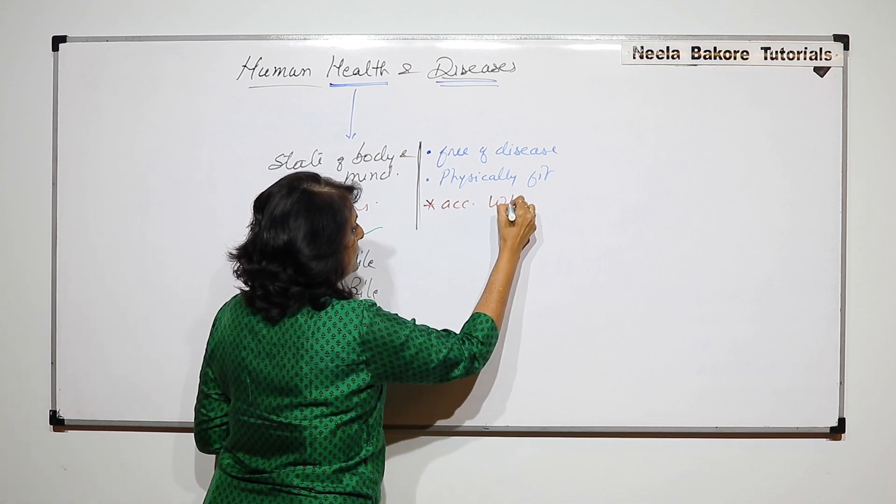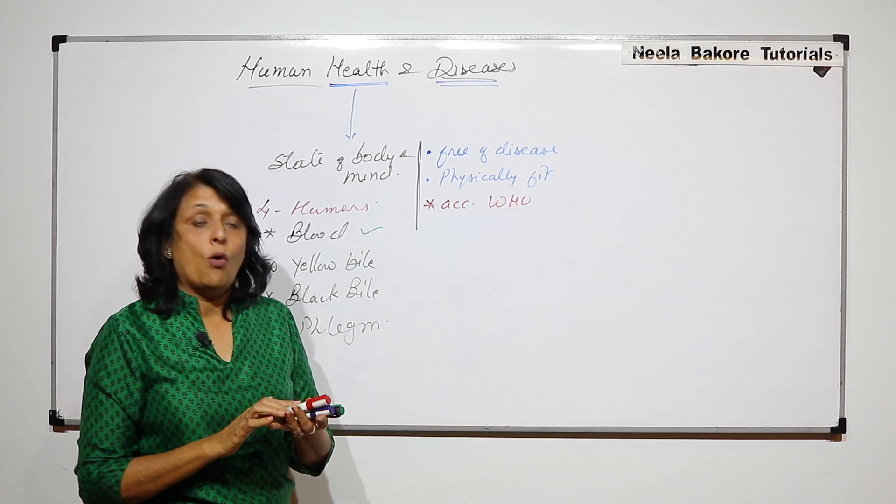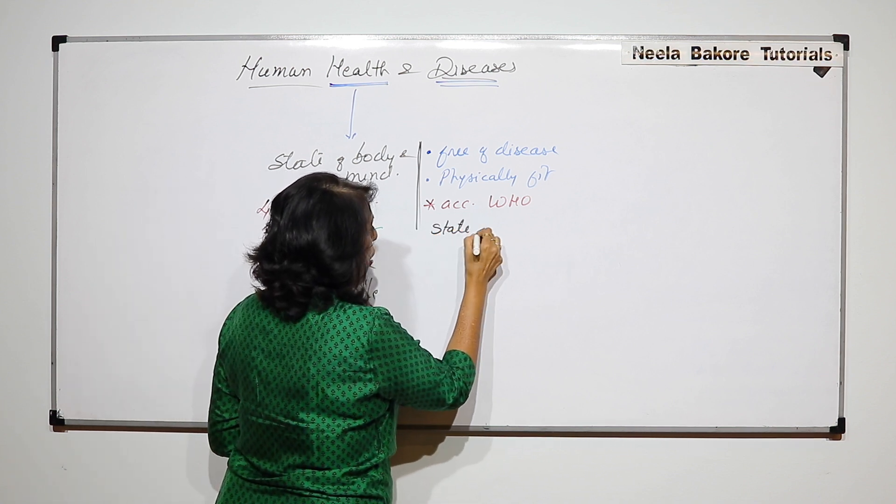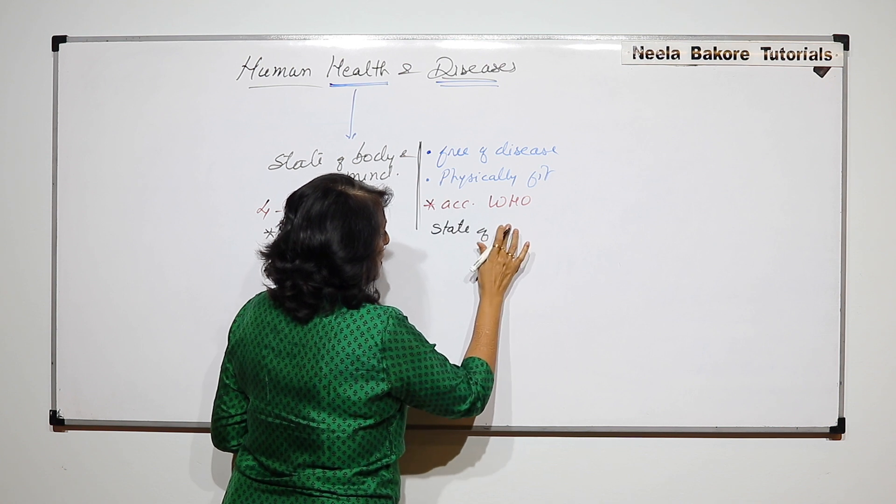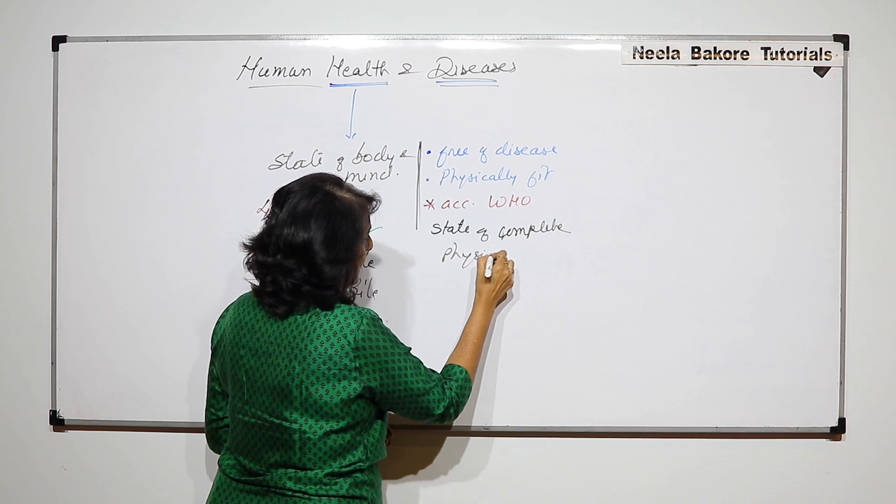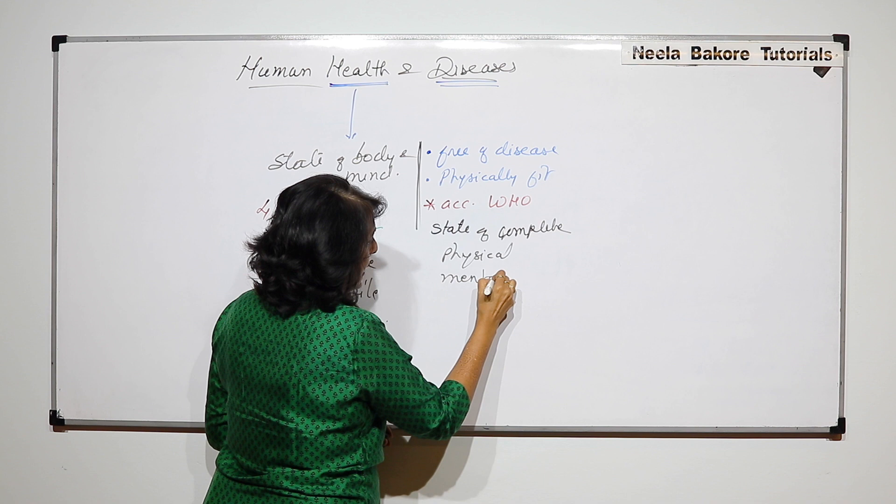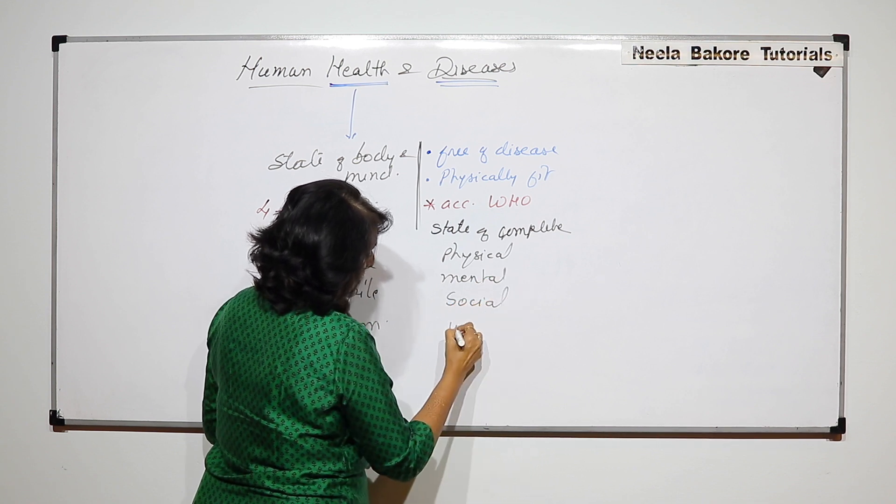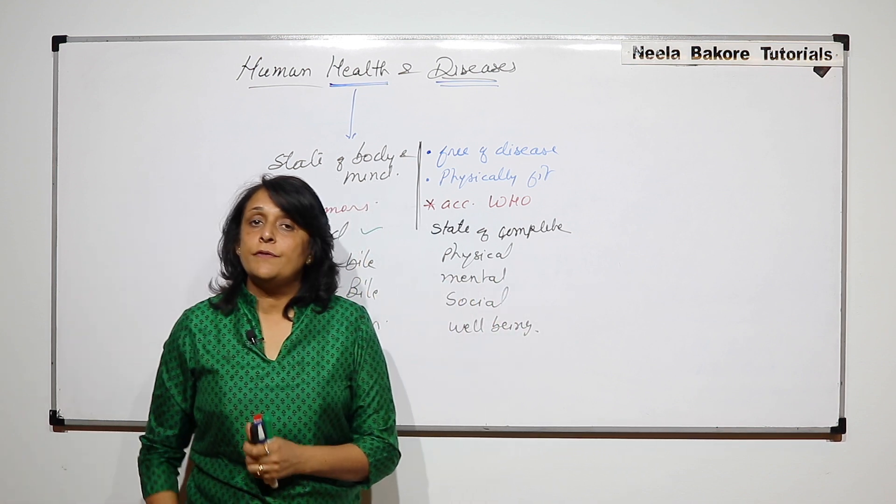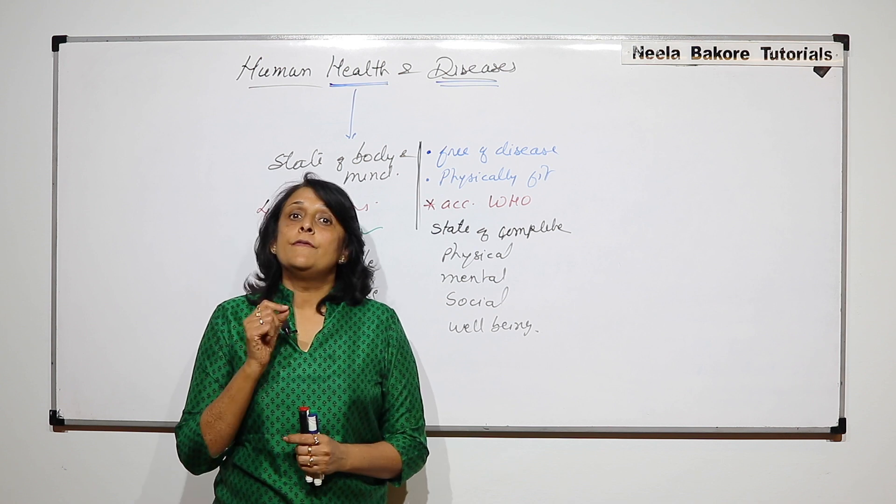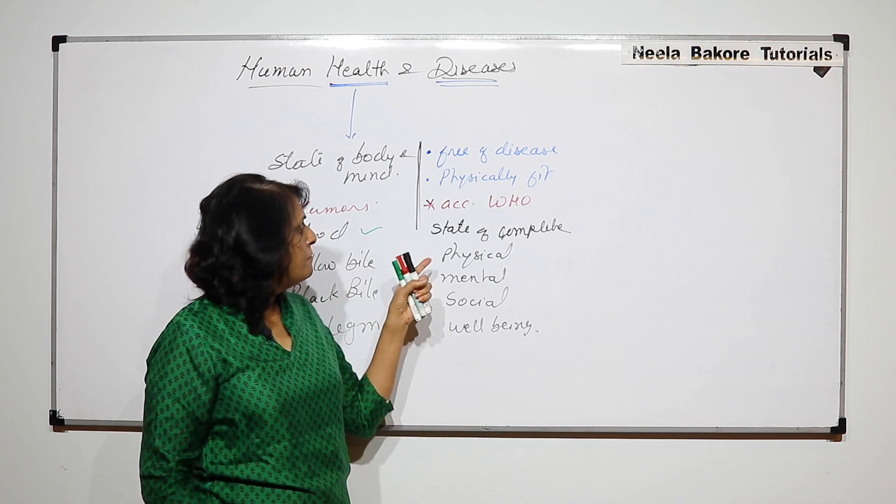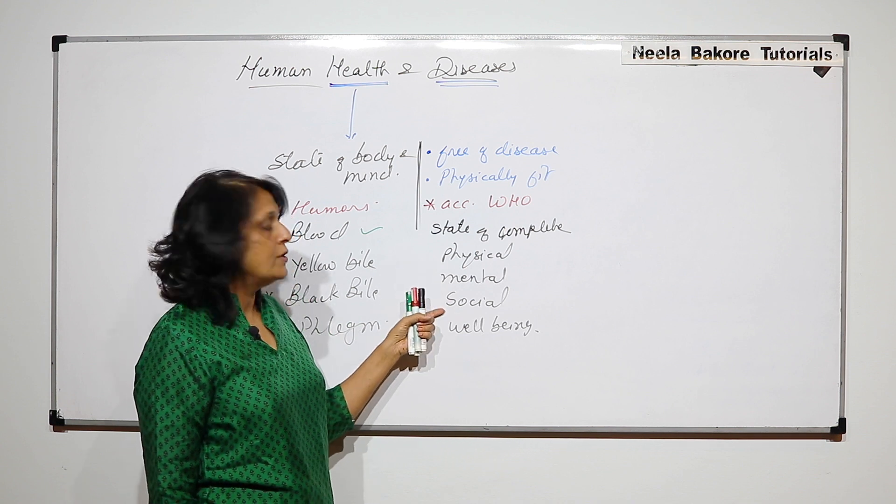But WHO has given another definition. According to WHO, that is World Health Organization, the health is defined as a state of complete physical, mental, and social well-being. This is a holistic definition which WHO has given. So if according to WHO, if a person is considered to be healthy, then it should be a state of complete physical well-being, mental well-being, and social well-being.